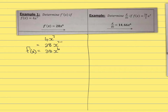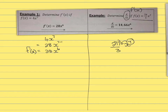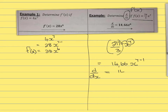Example 2: determine the derivative, which uses the same rule. You have 2π over 3 times x to the power 7. Multiply 2π/3 by 7, which gives approximately 14.66 or 14.7 depending on your calculator setting. The exponent becomes 7 minus 1, so d/dx equals 14.66x to the power 6.